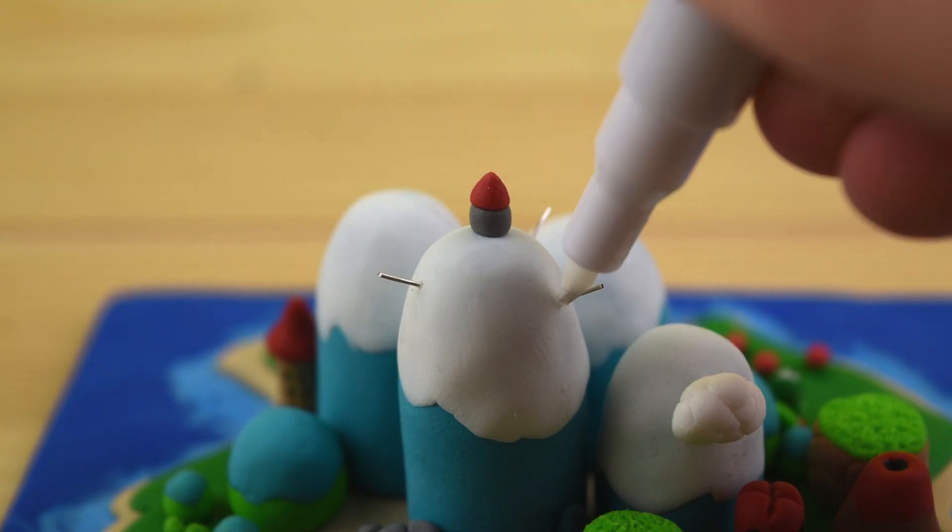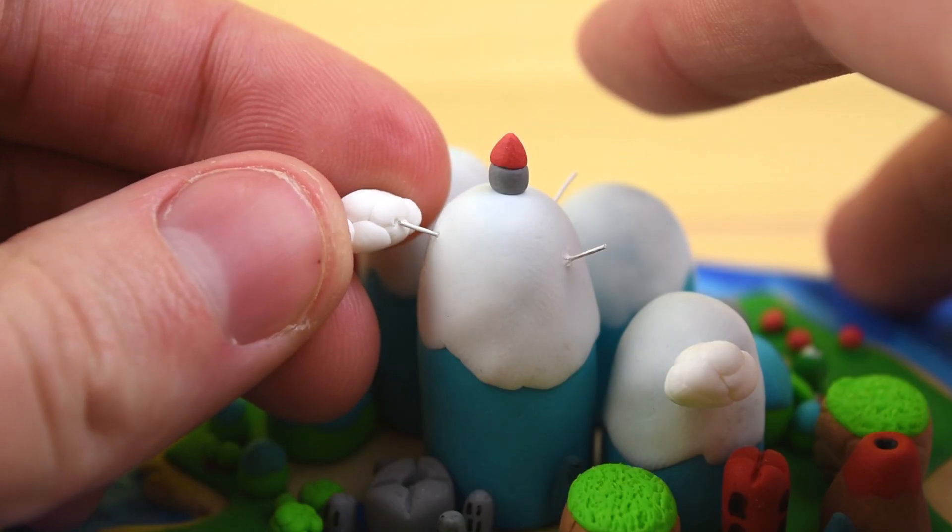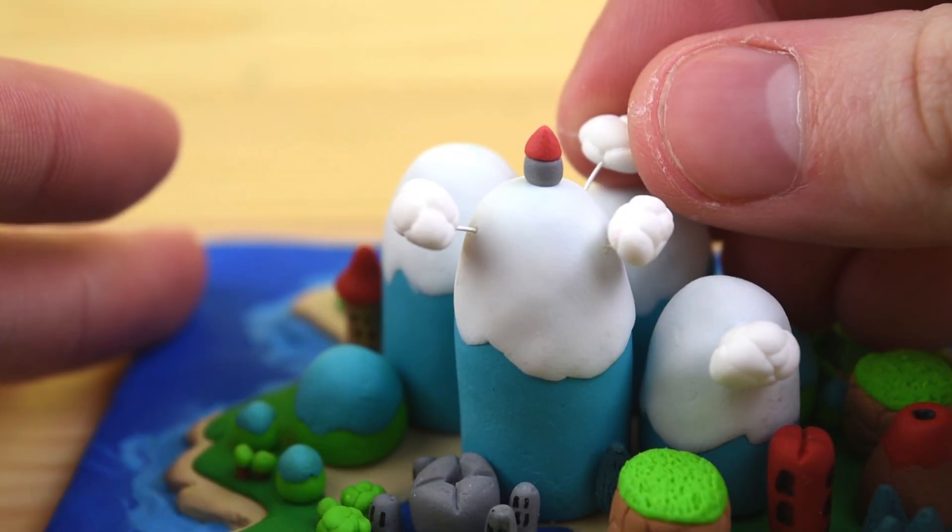After trimming all these wires, I wanted to make them blend in a little bit better, so I'm using this white paint marker, and we'll attach the clouds into them.